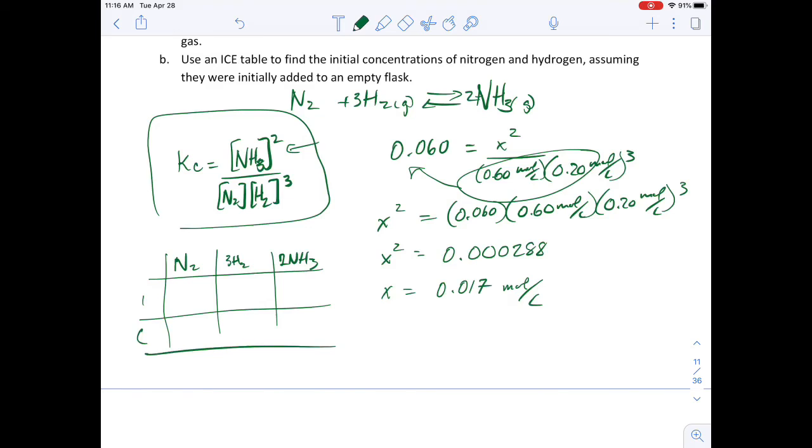My initial is what it asked me to get. I know that at equilibrium, my equilibrium concentration of nitrogen was 0.60, this was 0.20, and that my ammonia's concentration is here. So it's 0.017.